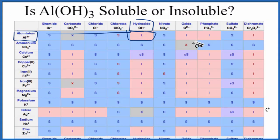So, in answer to our question, Al(OH)₃, aluminum hydroxide, will be slightly soluble in water. Just a very small amount will dissolve. This is Dr. B, and thanks for watching.